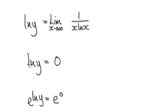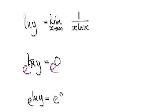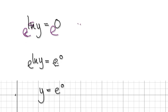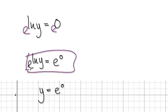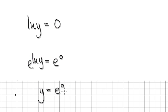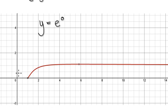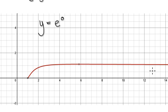So we have natural log of y equals 0. Now exponentiate both sides — e on this side, e on this side — and these cancel out, giving you y equals e to the power of 0, which is 1. If you plot the graph, you can see it is heading towards 1.